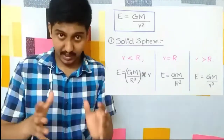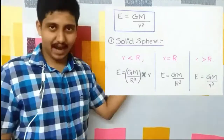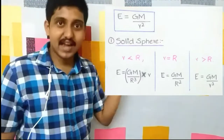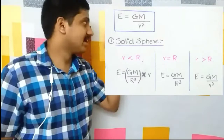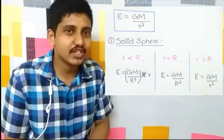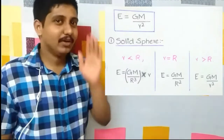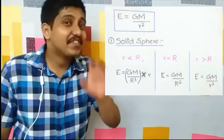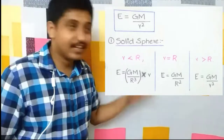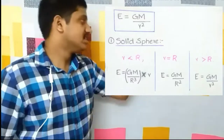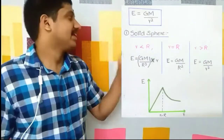Let's take the case of a solid sphere — even if asked about the Earth, you can treat it as a solid sphere. We get three cases: r < R, r = R, and r > R, where small r is the distance from the center and capital R is the radius. Inside the surface, E = Gm / R³ × r, which gives a straight sloping line. At the surface, E = Gm / R². Above the surface, E = Gm / r², giving a curve — same as in the case of acceleration due to gravity.